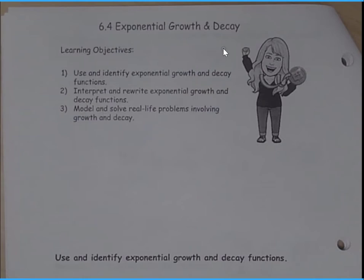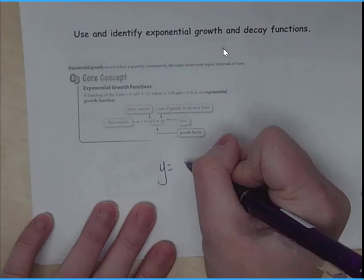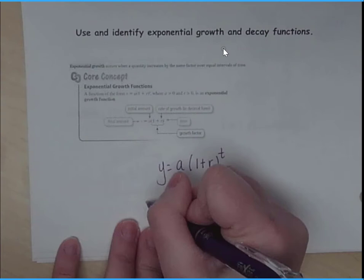So we're going to take a look at this formula first. We're going to look at growth first. We have y equals a times the quantity 1 plus r to the t power. Now I know we can kind of see here what all of this means, but let's take a closer look.